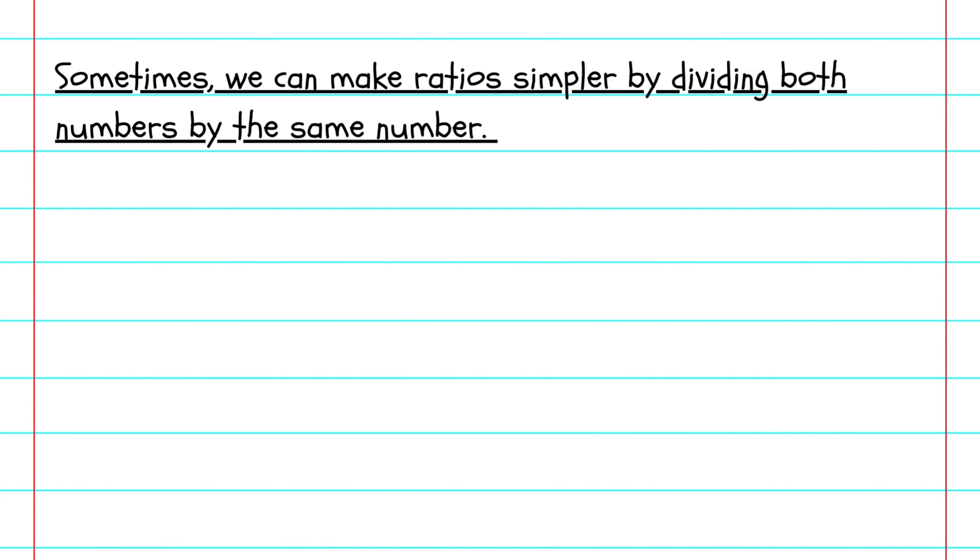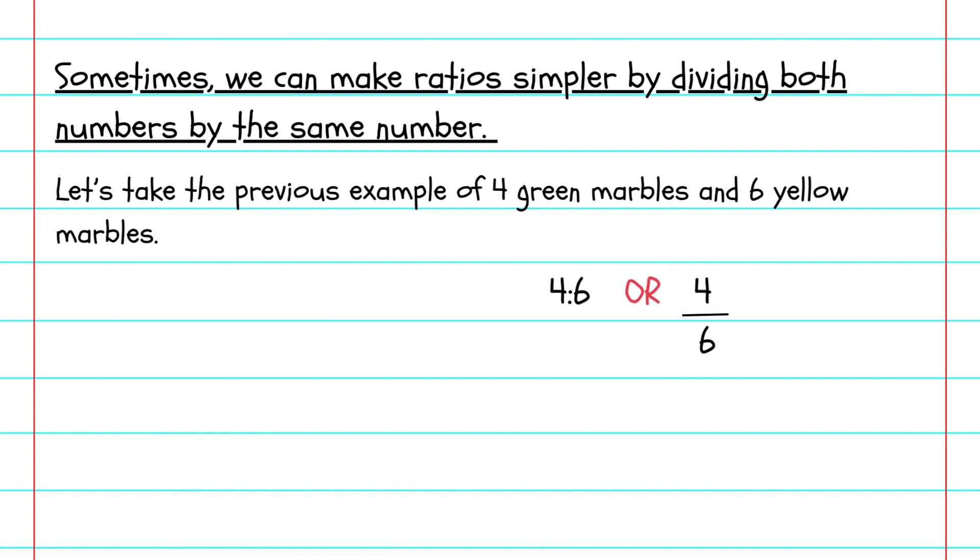Sometimes, we can make ratios simpler by dividing both numbers by the same number. Let's take the previous example of four green marbles and six yellow marbles. We know that the ratio we get is 4:6 or 4/6.